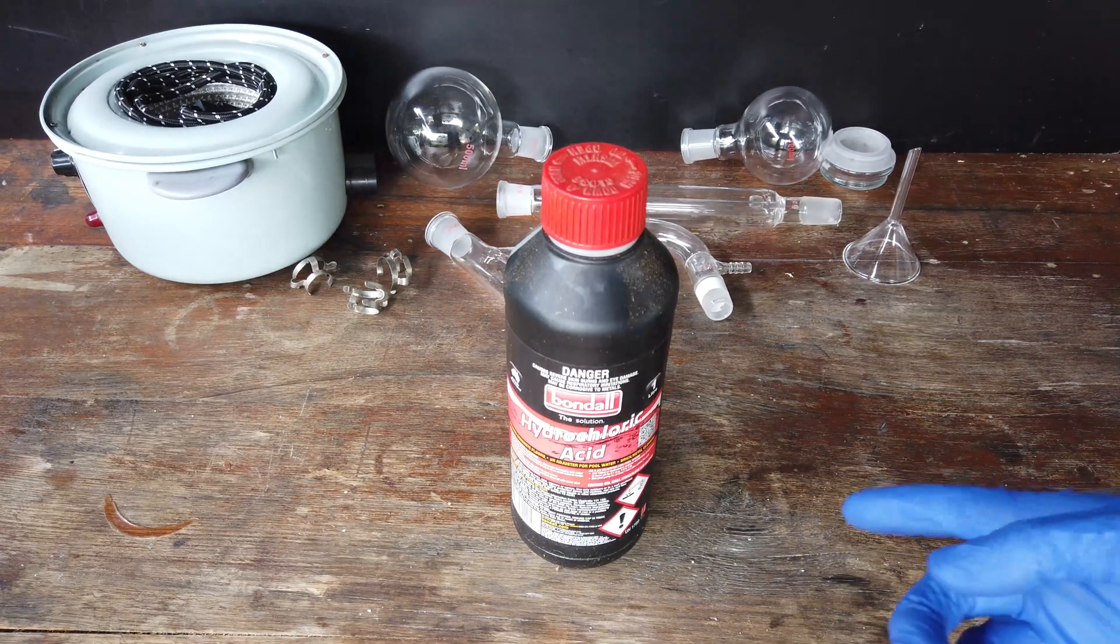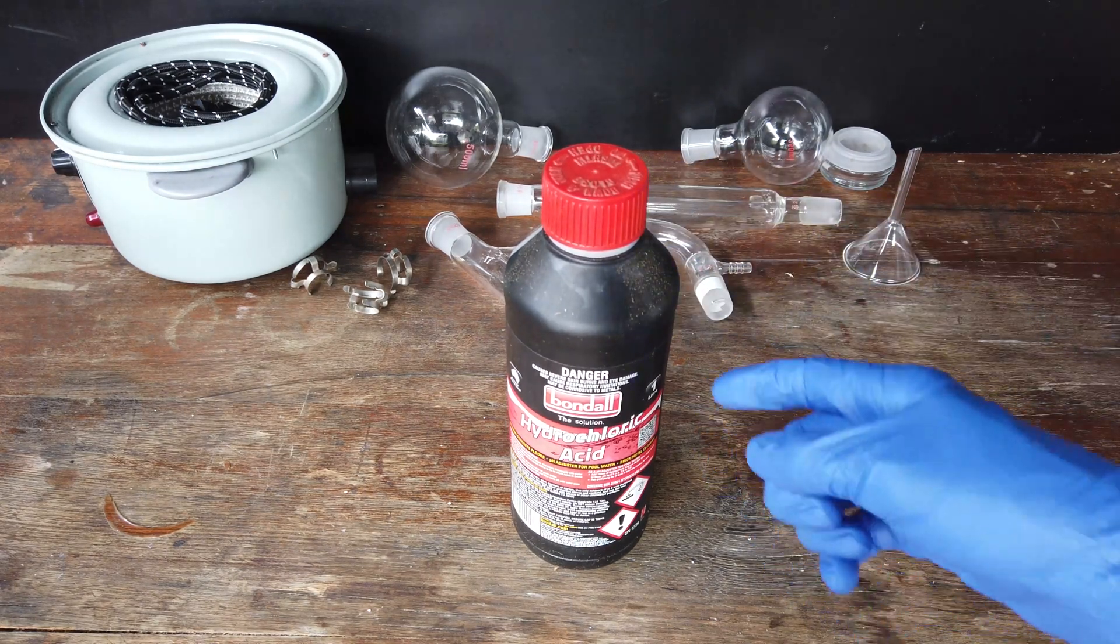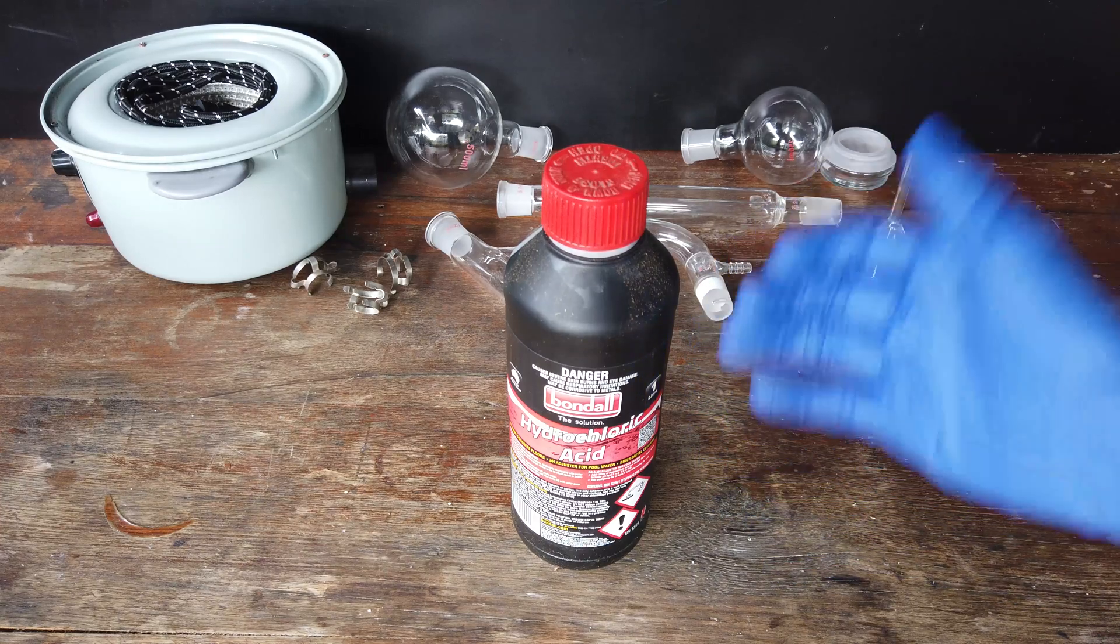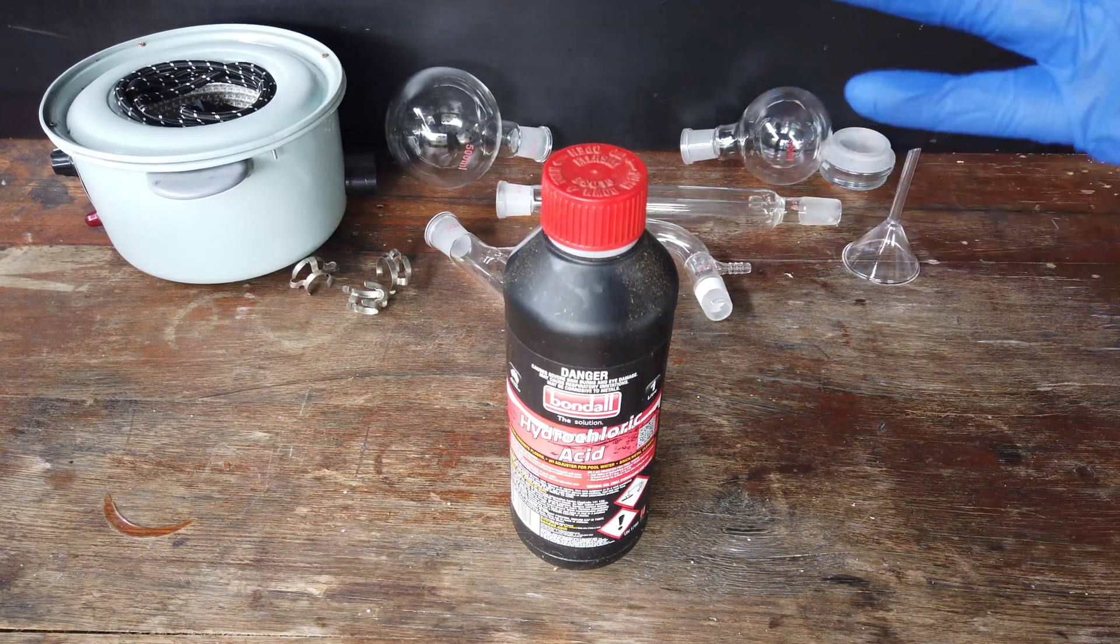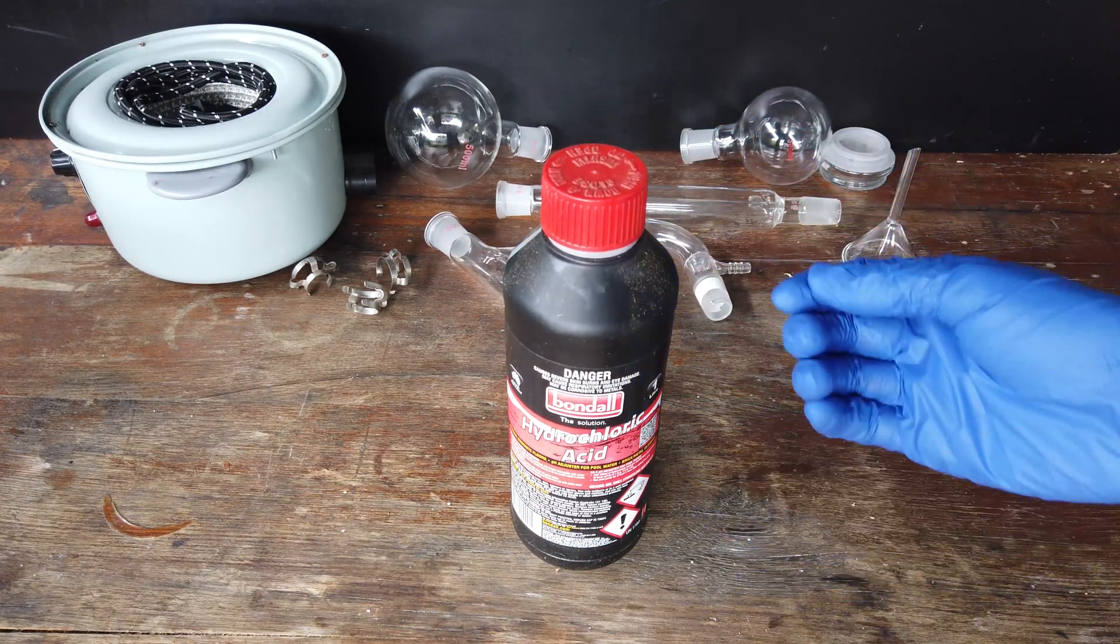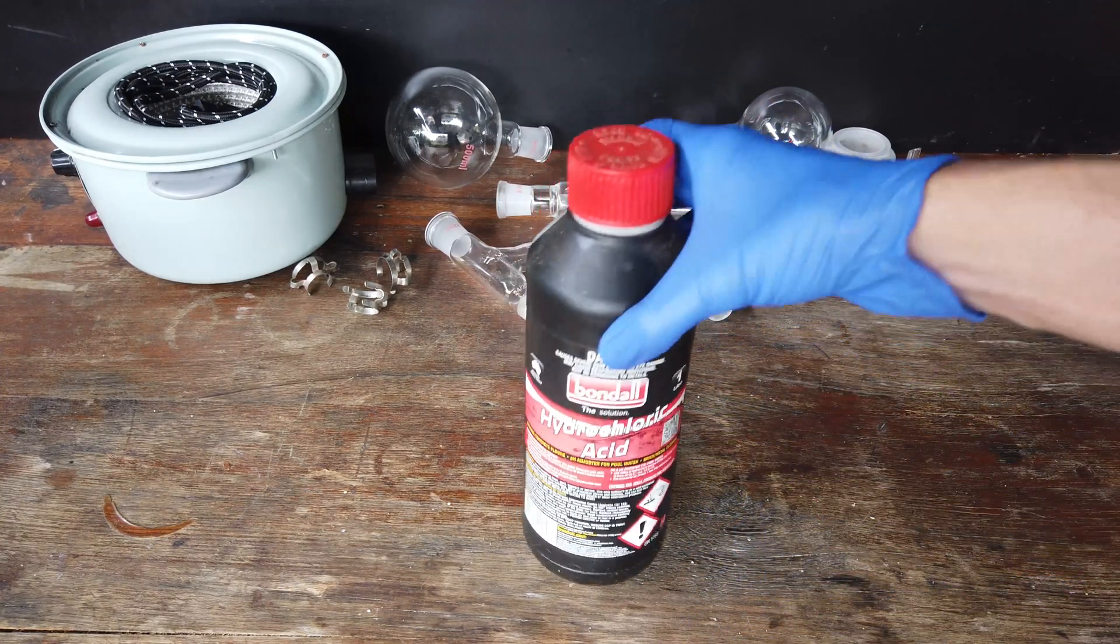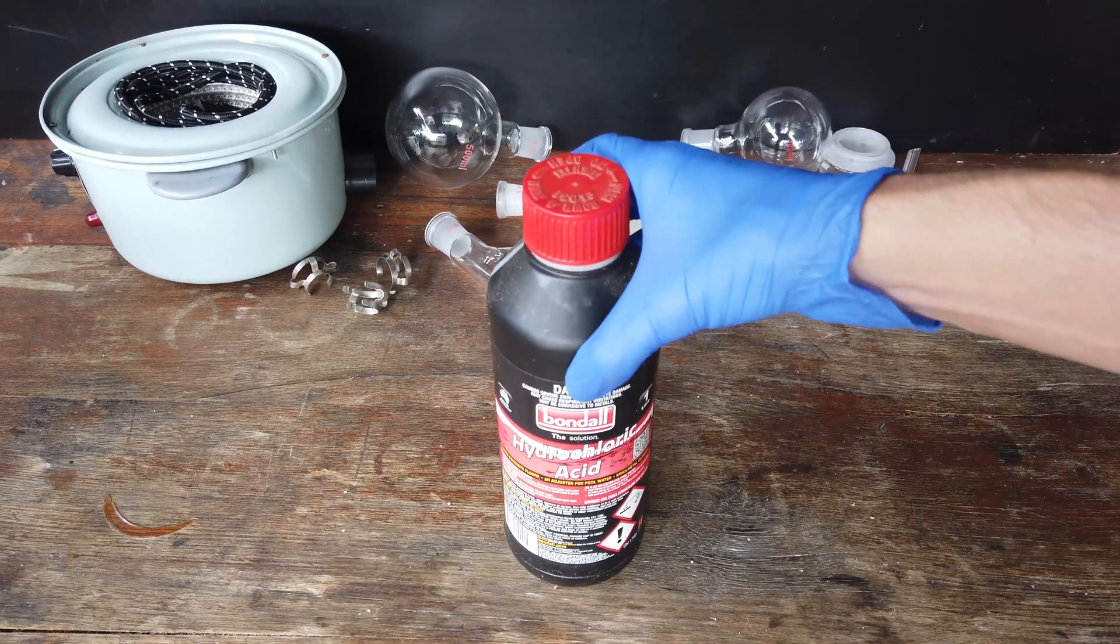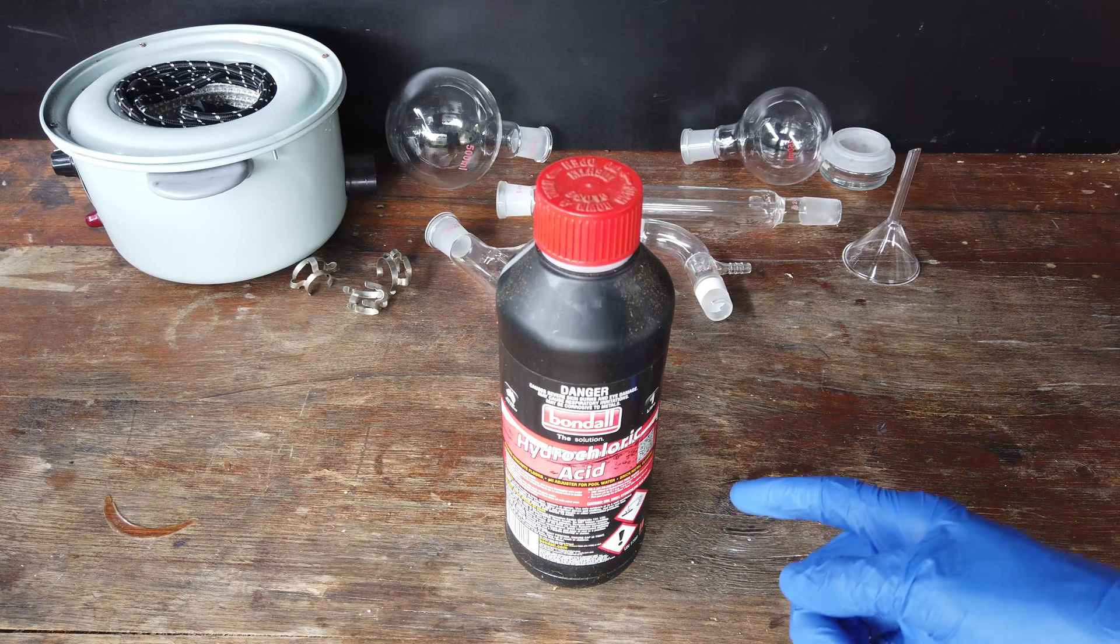The one downside to distilled hydrochloric acid is that the azeotrope of hydrochloric acid and water is about a 20% concentrated solution of hydrochloric acid. So as we boil our azeotrope, the distilled product that we're going to get is going to be quite significantly diluted compared to our concentrated 32% hydrochloric acid that we get here, but I think that's a pretty fair trade-off for purity.